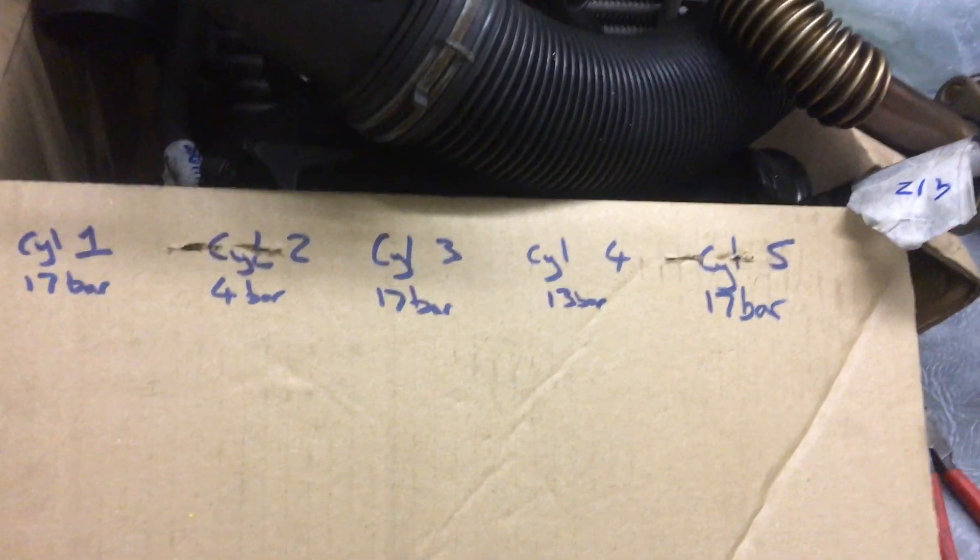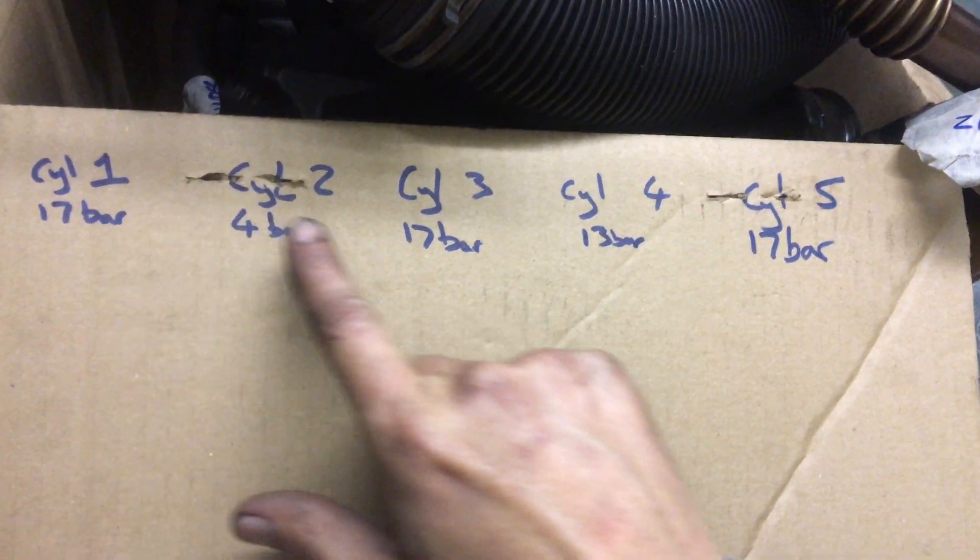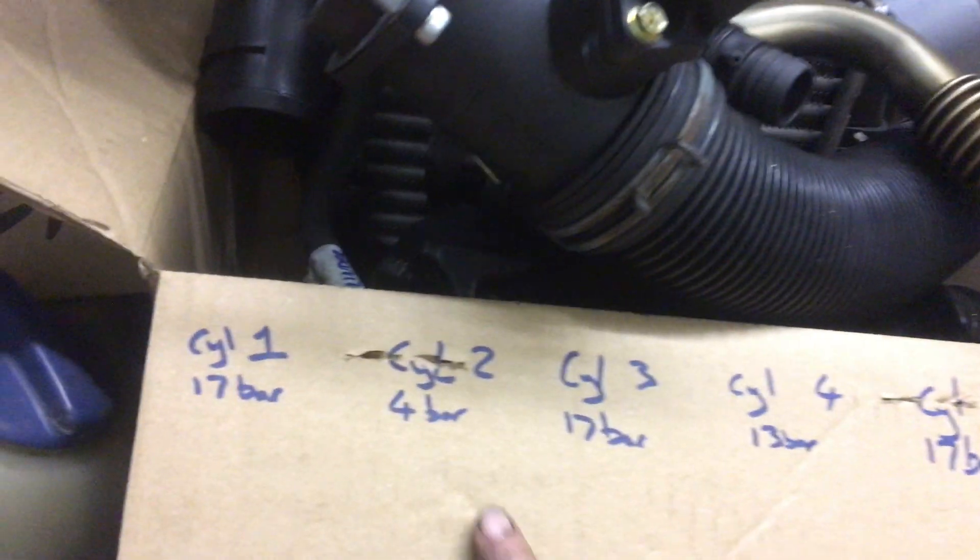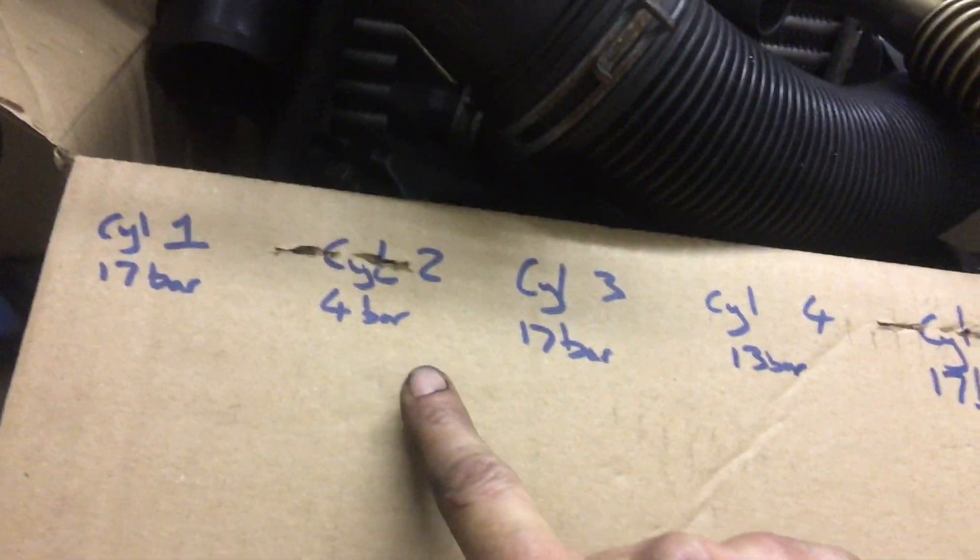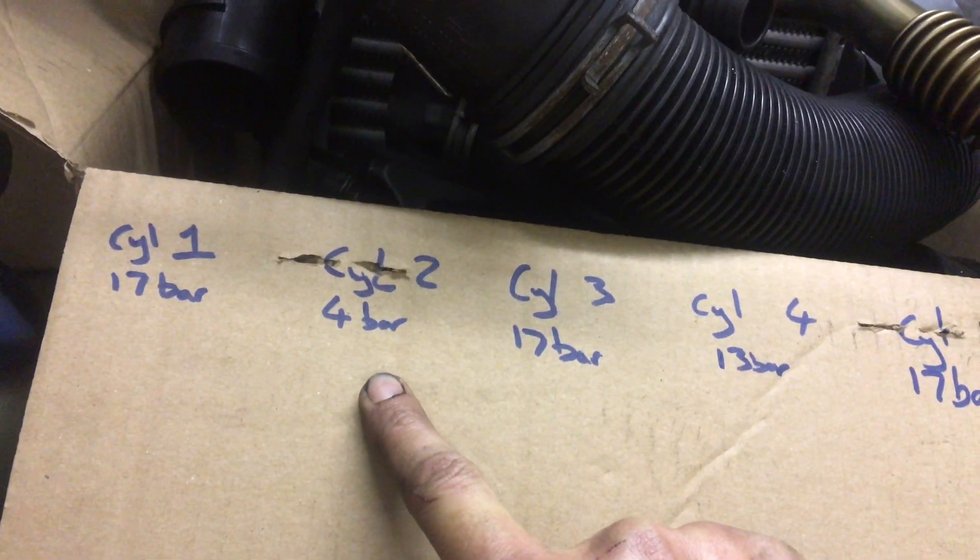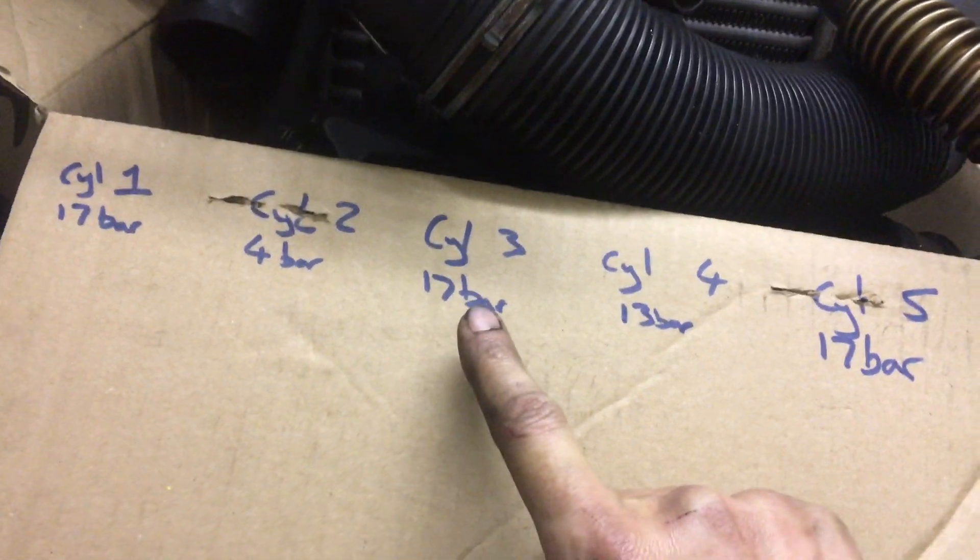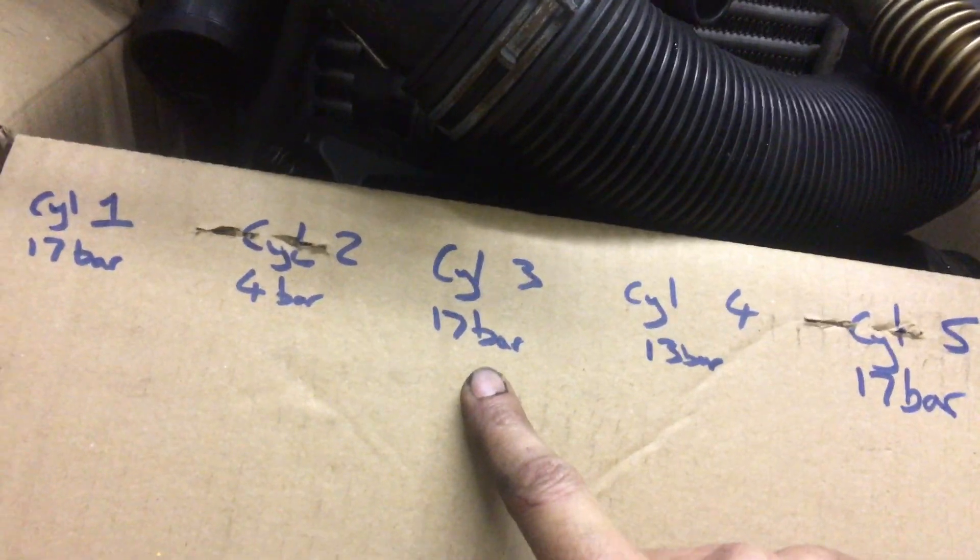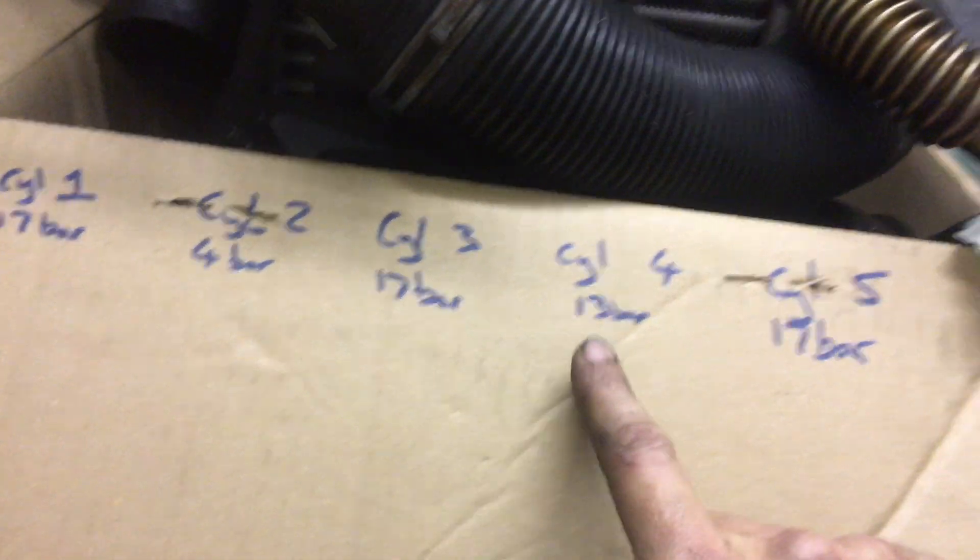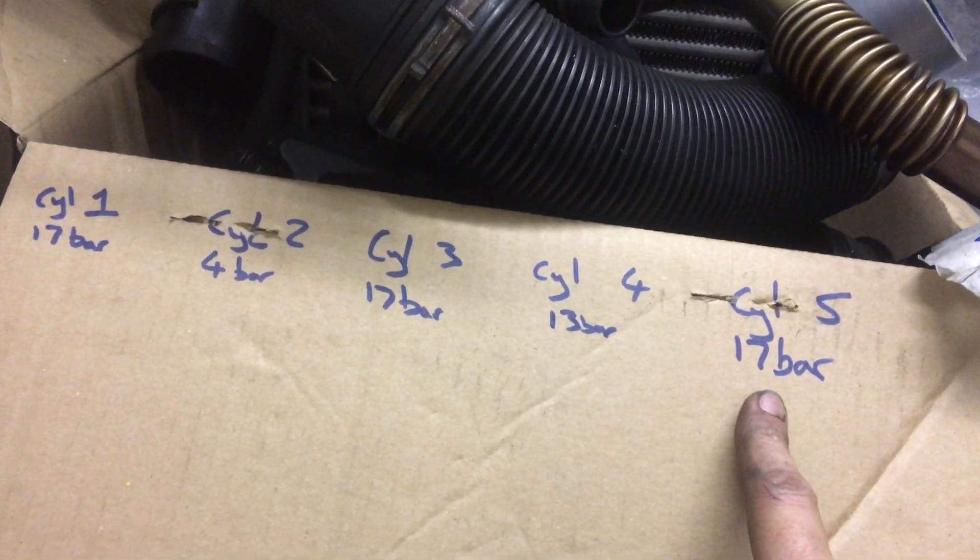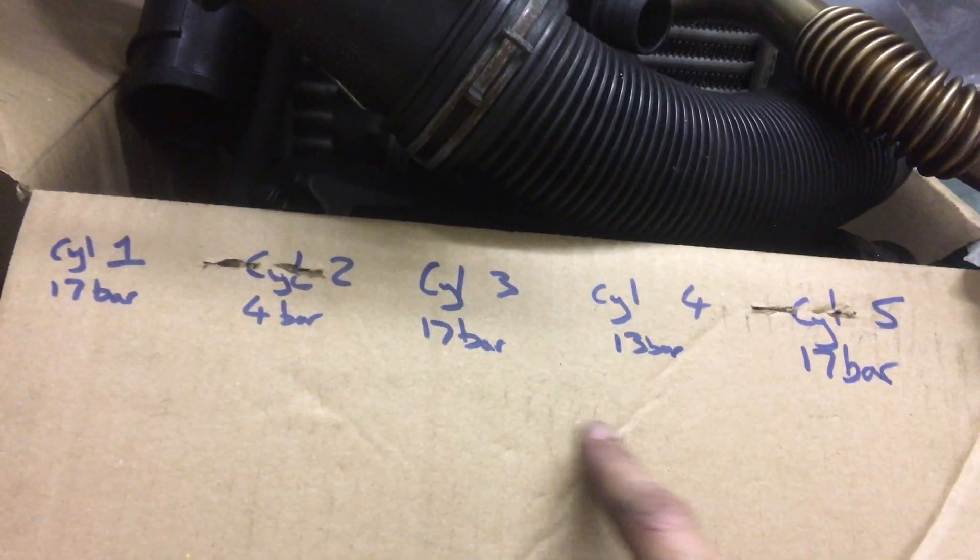Right, so I wrote down on the piece of cardboard here what the pressures were, so you can see cylinder 1, 17 bar, drops a lot for cylinder 2, 4 bar, then back up to 17 bar cylinder 3. Although I'm going to have to go through the footage now, I'm pretty sure cylinder 3 was quite slow building up pressure. Cylinder 4 again quite low and cylinder 5, so cylinders 1, 3, and 5 are all the same even though cylinder 3 was a little bit slow getting up to compression.